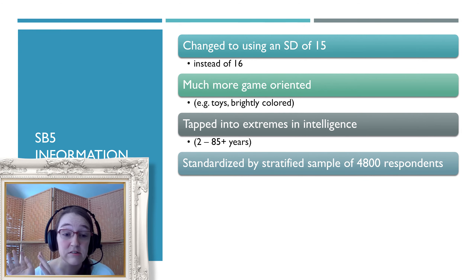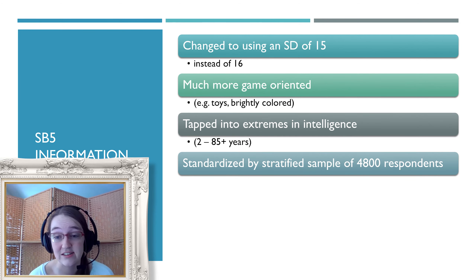The Stanford-Binet 5 changed the standard deviation to 15 instead of 16. So on the old tests, an IQ of 132 is now an IQ of 130 — it still represents the same two standard deviations above the mean. You just have to be mindful of what the standard deviation is to get a better sense of those IQ differences.